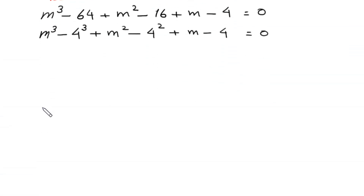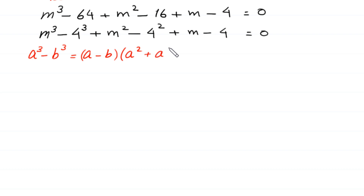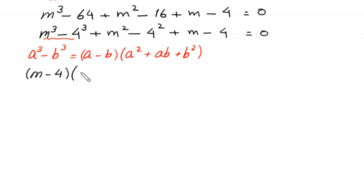Using the algebraic identity a cubed minus b cubed equals a minus b times a squared plus ab plus b squared, the term m cubed minus 4 cubed can be factorized as m minus 4 times m squared plus 4m plus 16.